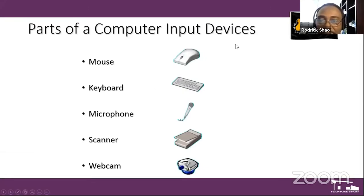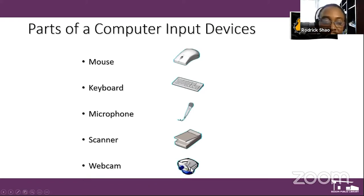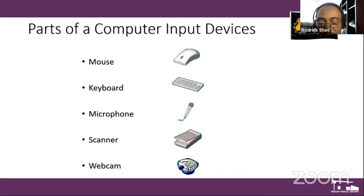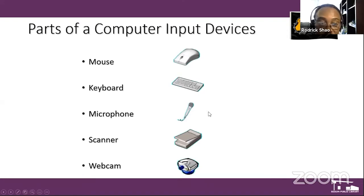Parts of a computer — I have some images here. A mouse is an input device. Keyboard — input device. Microphone — input device. A scanner, if you have one at home, is also an input device. A webcam, like the one I'm using right now to present this lesson — my computer has an attached webcam; other computers have a built-in one. These are examples of input devices that allow you to enter data in terms of text, numbers, images, or voice.